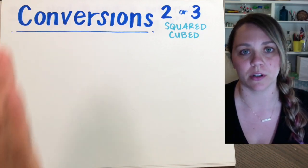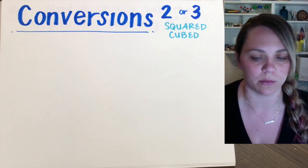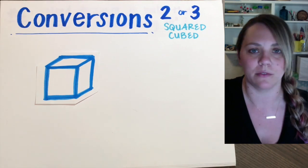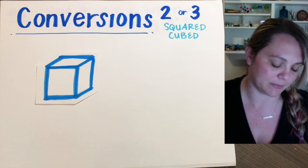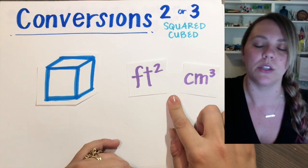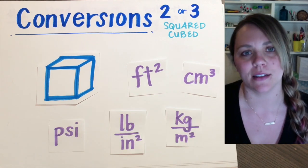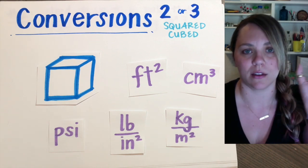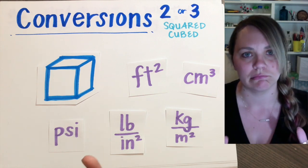What do you do when your conversions are squared or cubed? If you have some kind of unit that is squared or cubed, especially when we talk about volumes — volumes are cubic, you're talking about length times width times height. So any type of unit that has a square or a cube, it gets intense if you don't understand how to convert. But once you get the trick, it's easy.